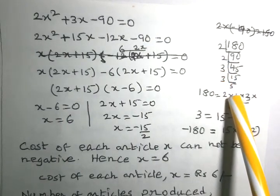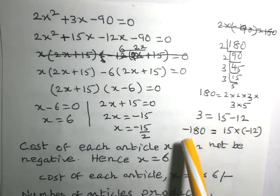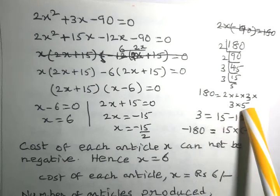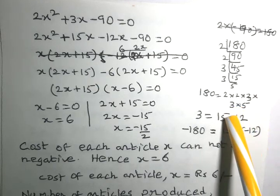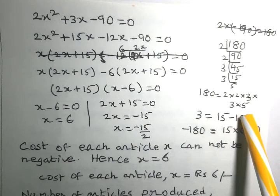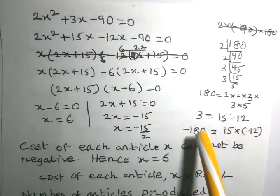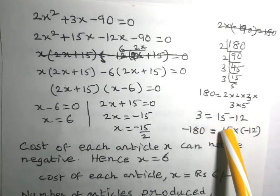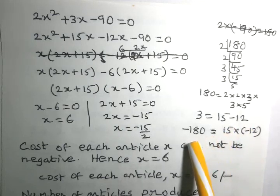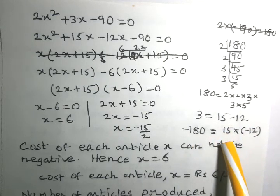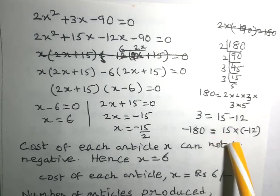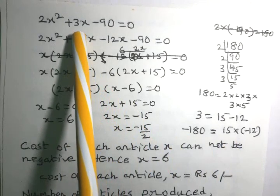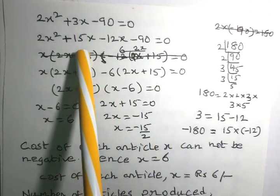180 can be written as the product of prime numbers: 2 times 2 times 3 times 3 times 3 times 5. The middle term 3x can be split as the sum of 15x and minus 12x, since 15 minus 12 equals 3 and 15 times minus 12 equals minus 180.